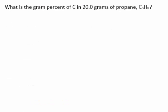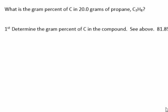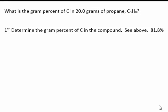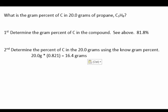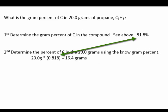What is the gram percent of carbon in 20 grams of propane? First, determine the gram percent of carbon in the compound, as we did above, 81.8%. Next, determine the percent of carbon in the 20 grams using the known percent. Convert the percent to a decimal value, then multiply that decimal value by 20 grams.